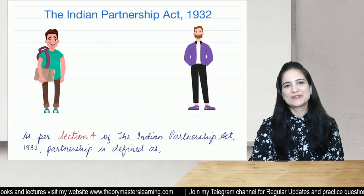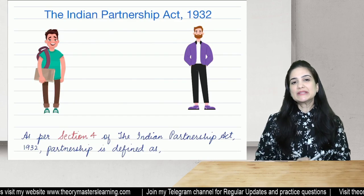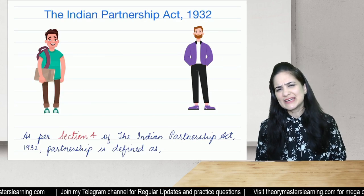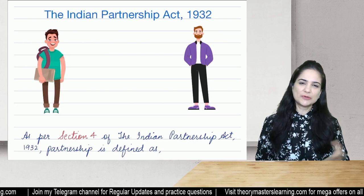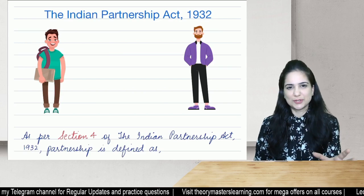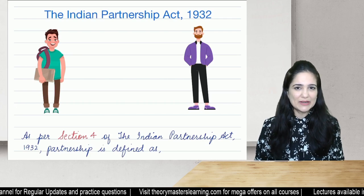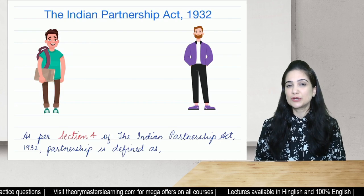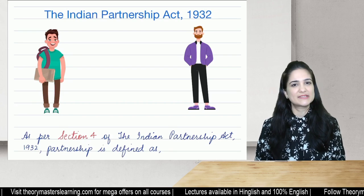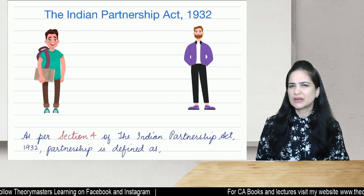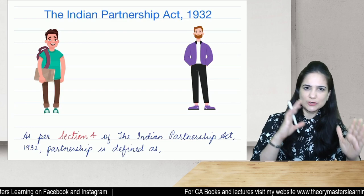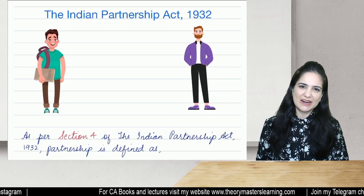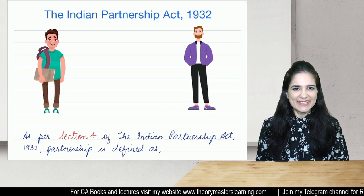Let us discuss the Indian Partnership Act 1932. This is one very interesting act and you will find it in CA Foundation as well as 12th standard. In CA Foundation law syllabus the entire act is discussed in detail. The weightage of this chapter will be somewhere around 10 to 12 marks — a wide range should always be considered — and three to four questions will be asked from this act.